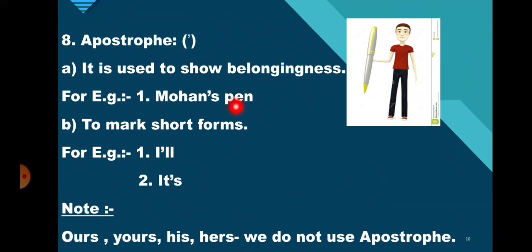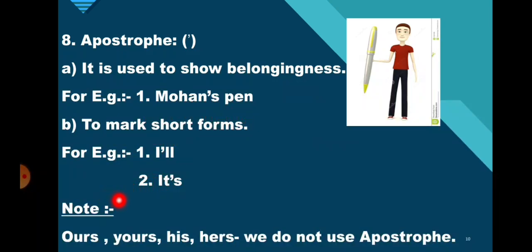The apostrophe is used to show belongingness. For example: Mohan's pen. It is also used to mark short forms. For example: I will → I'll; it is → it's. Apostrophe shows belongingness and marks short forms. Students, keep in mind that for pronouns like ours, yours, his, and us, we do not use any apostrophe.